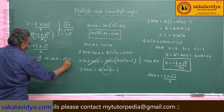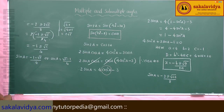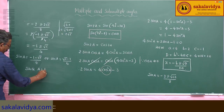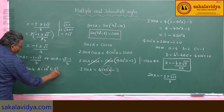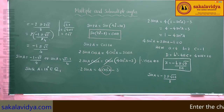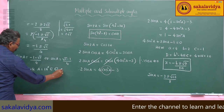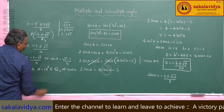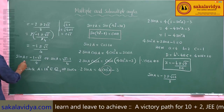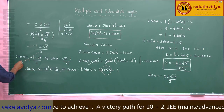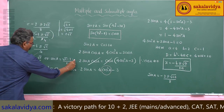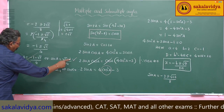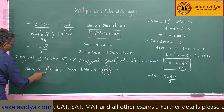Since a = 18° lies in the first quadrant, sin(a) must be positive. Therefore we reject the solution (-1 - √5)/4 and take sin(a) = (√5 - 1)/4. Therefore, sin(18°) = (√5 - 1)/4.